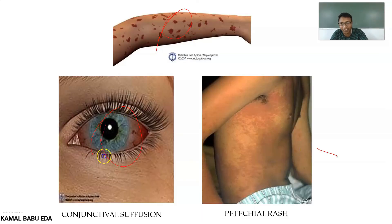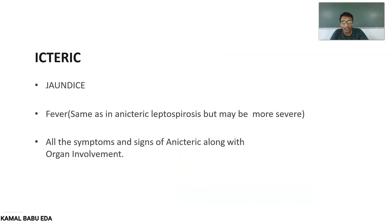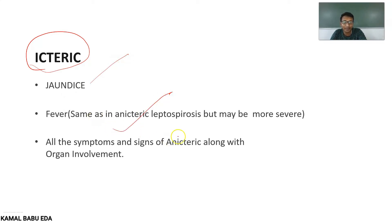Examples of petechial hemorrhage and conjunctival suffusion can be observed. In the icteric condition, all signs and symptoms are the same as in the anicteric condition, with the addition of jaundice — meaning increased bilirubin levels in the body. Fevers in icteric condition are more dangerous and severe compared to the anicteric condition.